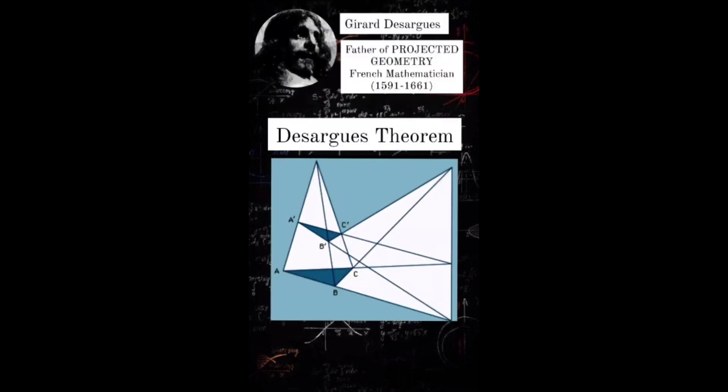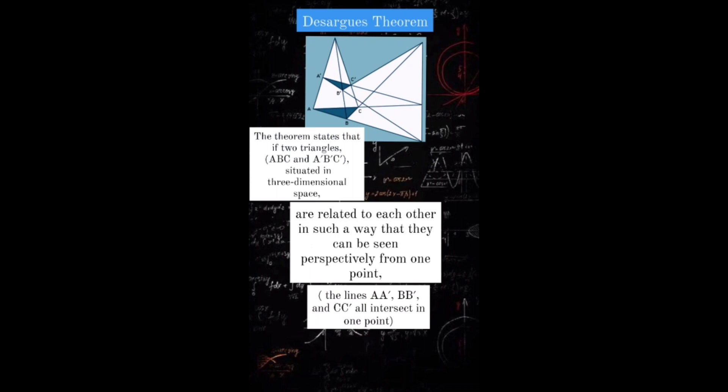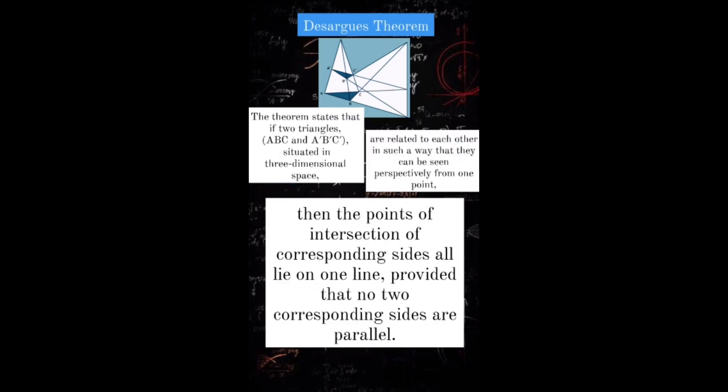Gerard Desargues is known as the father of projective geometry. He is also the man behind the Desargues theorem. The theorem states that if two triangles, situated in three-dimensional space, are related to each other in such a way that they can be seen perspectively from one point, then the points of intersection of corresponding sides all lie on one line, provided that no two corresponding sides are parallel.